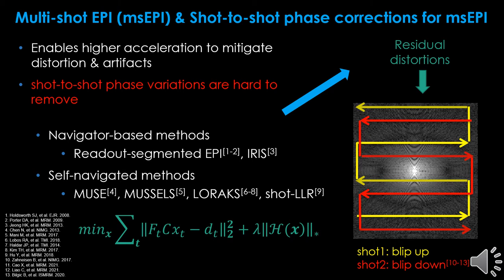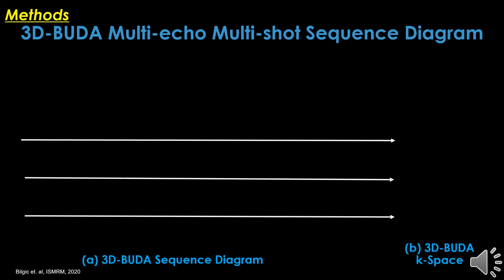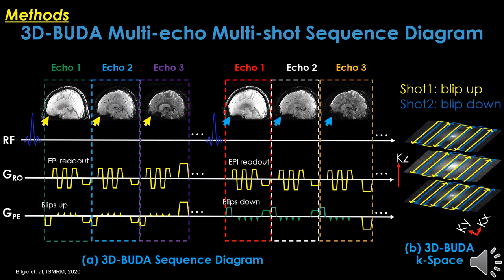They just neglect the residual distortions. Recently, a blip-up blip-down acquisition was proposed for further eradicating the distortions. Instead of obtaining two shots with the same polarity, they acquire the shots with inverse polarity, aiming at totally solving distortion issues. Similarly, we propose the BUDA technique for 3D readout with both single-shot cases in blip-up and blip-down.